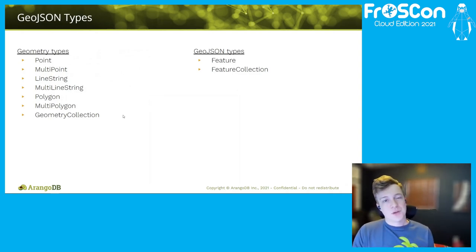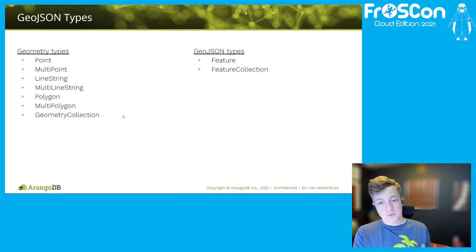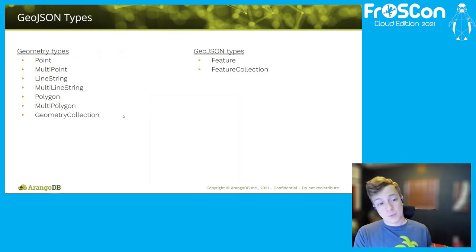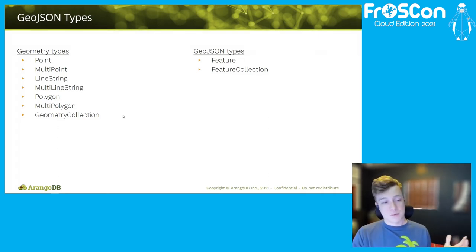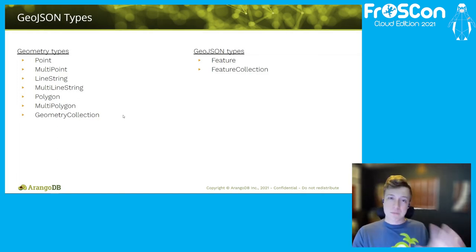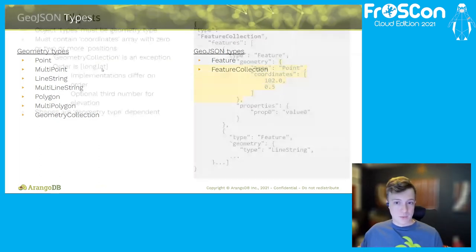The most common thing you'll encounter when working with GeoJSON are its types. There are seven geometry types — Point, MultiPoint, LineString, MultiLineString, Polygon, MultiPolygon, and GeometryCollection — and two GeoJSON types: Feature and FeatureCollection, which serve as an organizational structure. Looking at an example from the specification, we're looking at a FeatureCollection that contains Features. The geometry type here is Point, which is a single point on a map, and it must contain a coordinates array with zero or two or more positions.